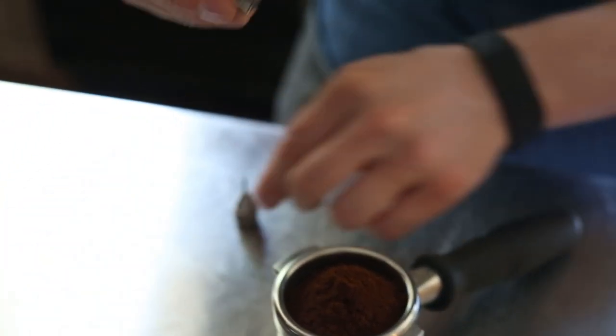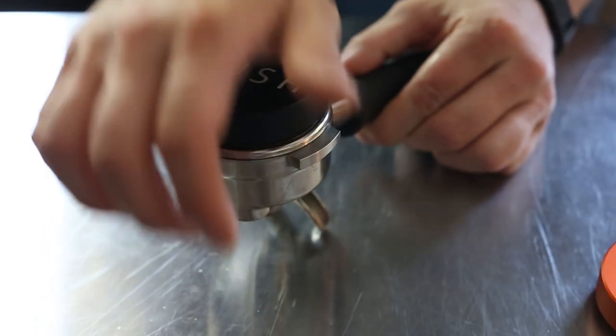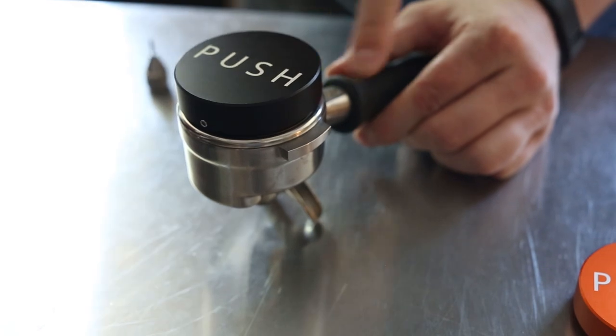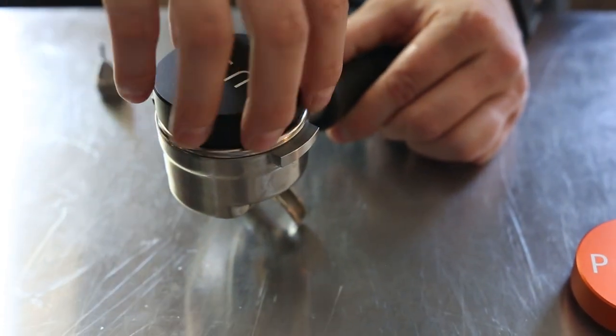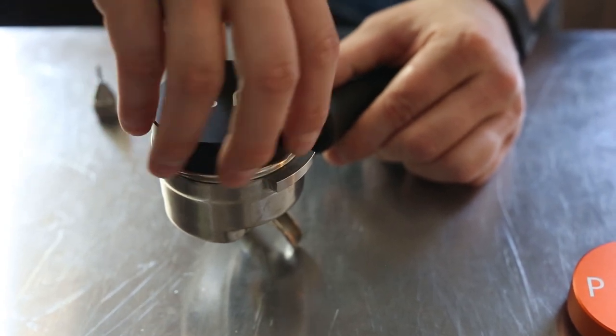I'm going to compress the coffee in my basket. You'll notice the rim of the handle isn't touching the basket rim right now. I'm going to lightly twist it until it makes contact with the basket.